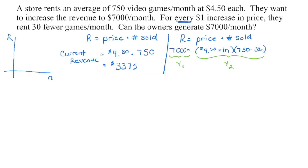Another type of question that sometimes comes up is revenue. We did a lot of revenue when we dealt with quadratic functions — we're going to roll it into quadratic equations. In revenue, I'm generally looking to maximize profit. My Y value is the revenue R, and n is the number of increases. In this case, a video game store is renting 750 games a month at four dollars and fifty cents each. The current revenue is price times number sold. We can set up a revenue function in factored form: start with current price and current number sold, then account for what changes. For every one dollar increase, we add plus one n to the price and sell 30 fewer games.